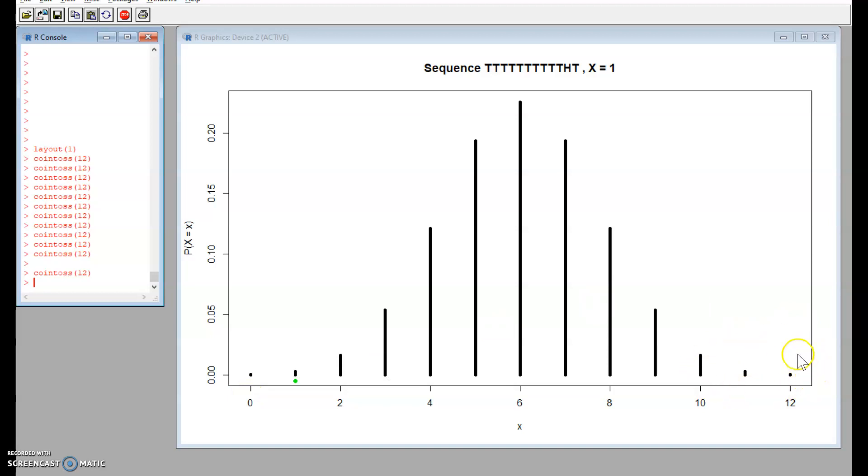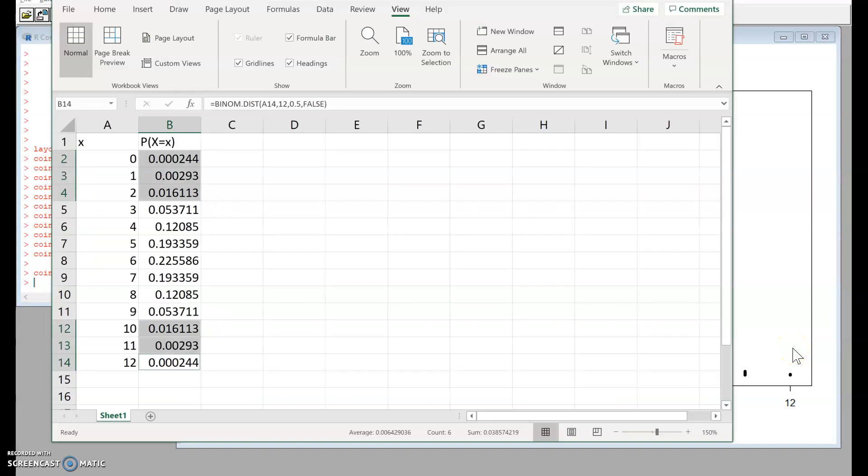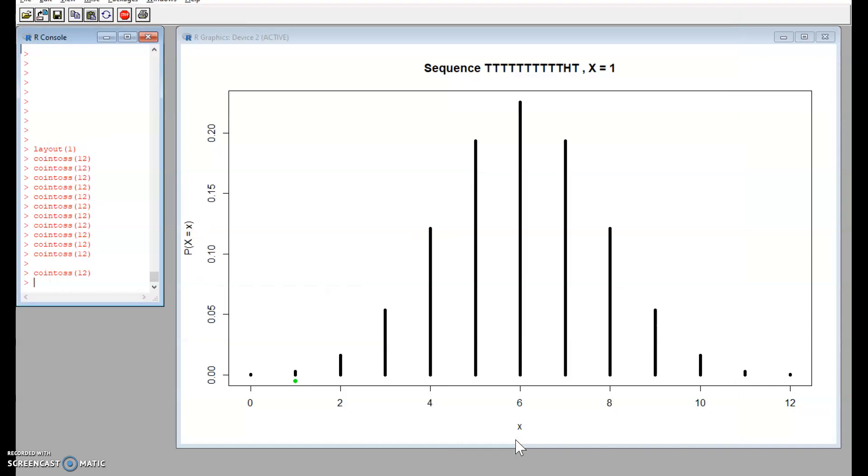0, 1, 2, 10, 11 and 12 combined have a probability of just under 5%. And when we see an outcome of an experiment like that it makes us question the underlying assumptions we've made about the experiment. In particular here, what is the probability of getting a head?